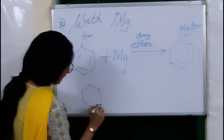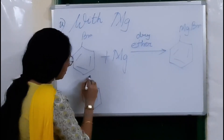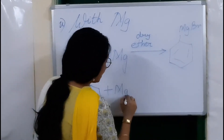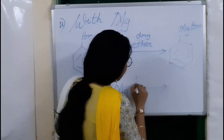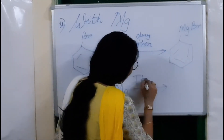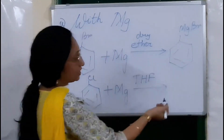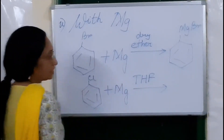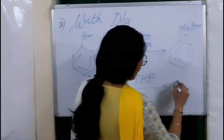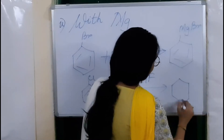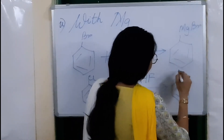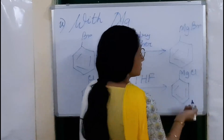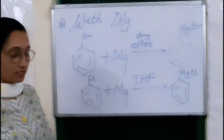Chlorobenzene prefers to react with magnesium in tetrahydrofuran medium rather than dry ether, and here we will get phenyl magnesium chloride. This is also a Grignard reagent.